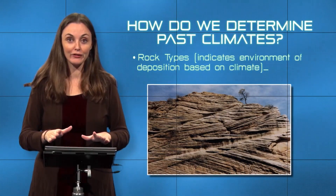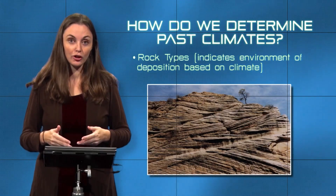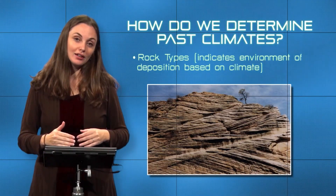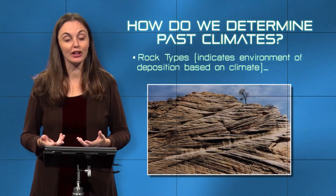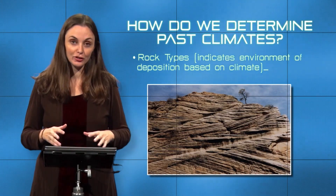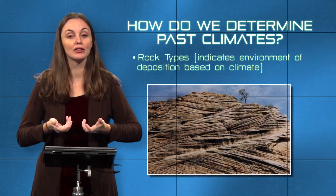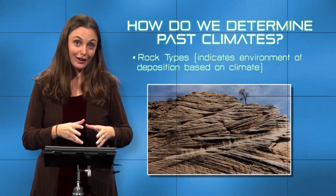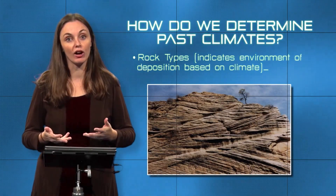For example, the cross-bedded sandstones found in the western US today in places like Arizona — the way they're deposited in angled cross-bedded units indicates the environment of deposition. In the very distant past, hundreds of millions of years ago, this environment used to be a very arid desert with sand dunes. When those sand dunes were buried and lithified, they preserved the way they were originally deposited, giving us a record of both dry conditions and high temperatures — a hot, arid environment.